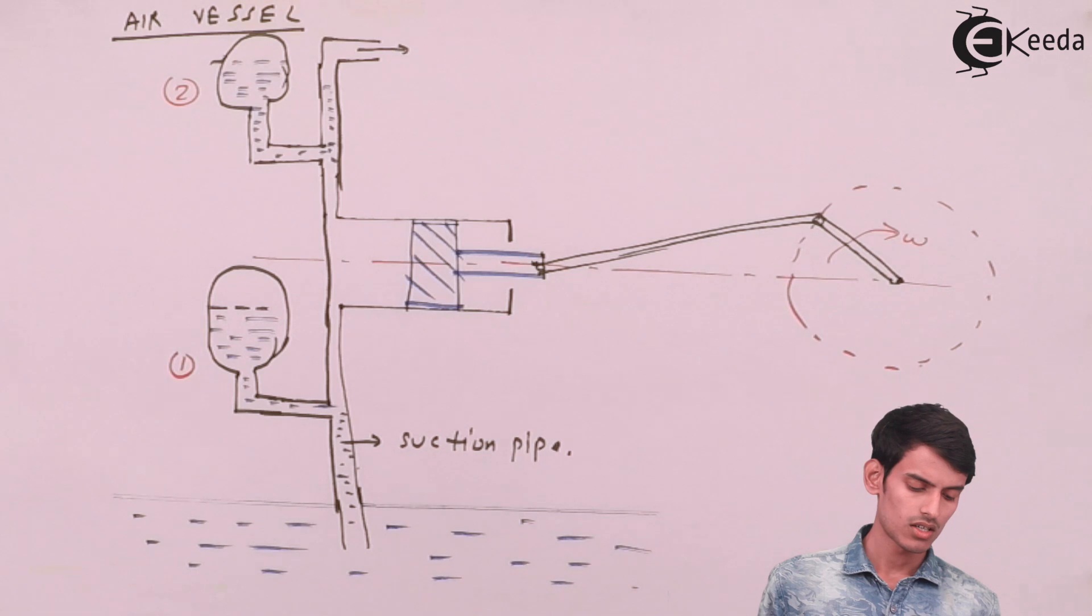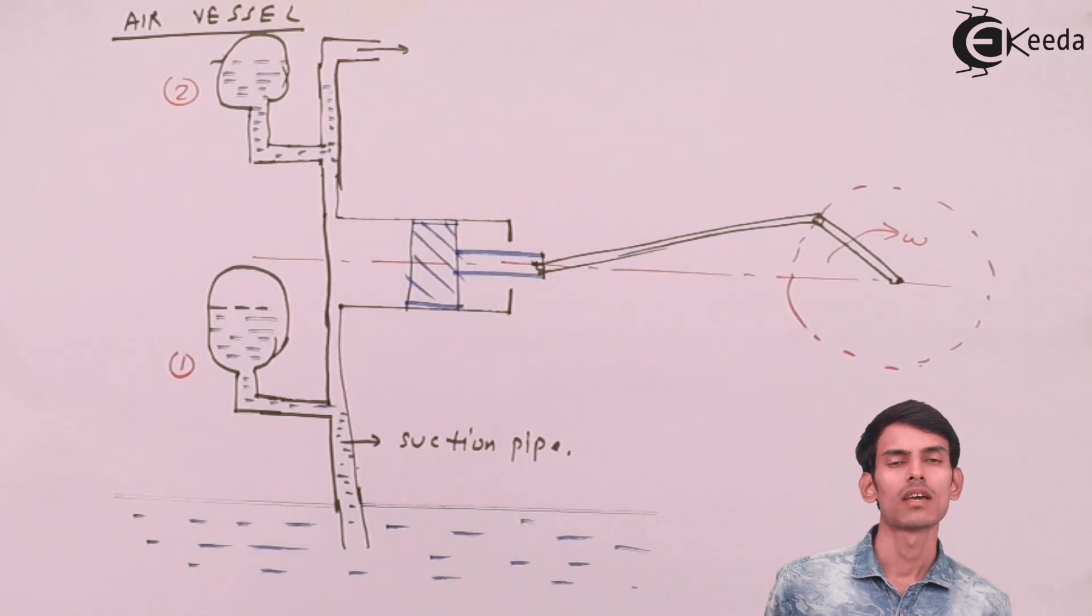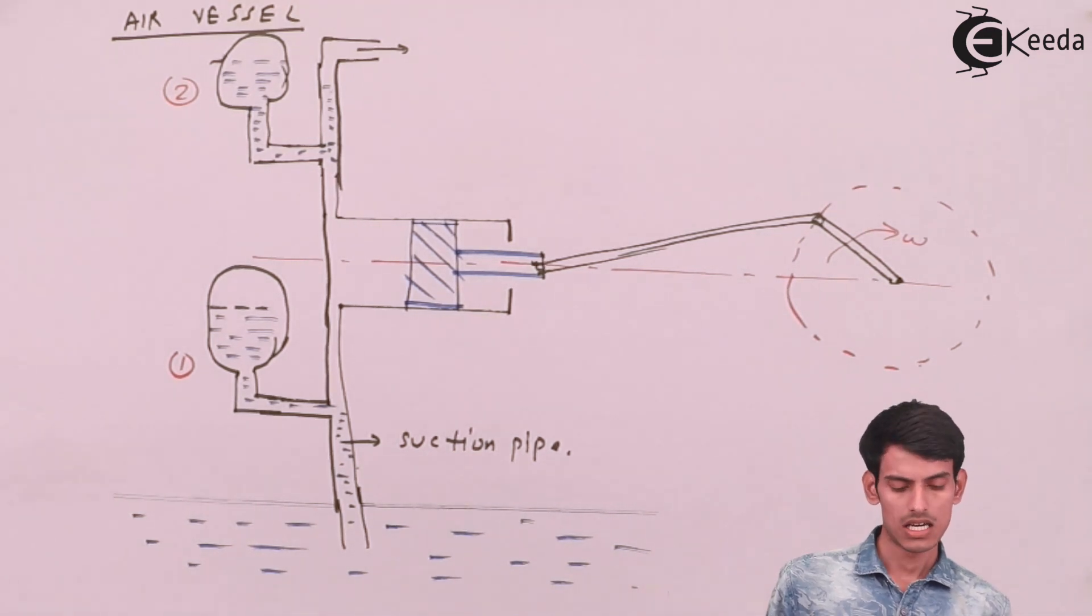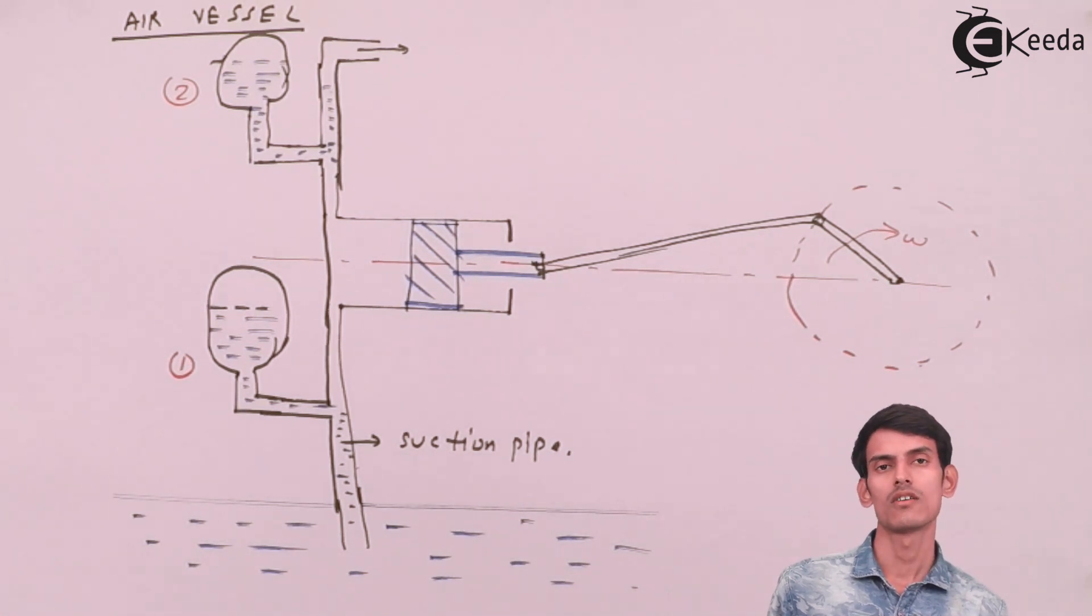Just at the inlet of the suction pipe, when the suction pipe is about to enter into the pump, there is a pipe, that is the air vessel. And at the discharge end also, when the water comes out from the pump in the delivery pipe, there is a container in which the air is filled, that is also the air vessel.